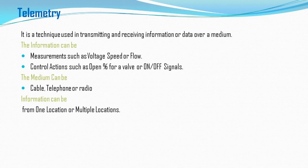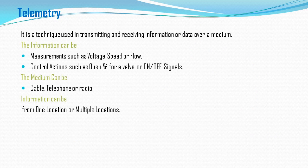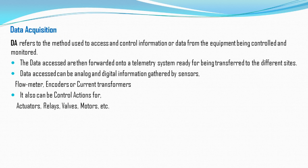Information can come from one location or multiple locations. For example, if you have three or four plants, information can come from all of them to the master control room. Data acquisition refers to the method used to access and control information from the equipment being monitored and controlled. Data is then forwarded into the telemetry system, ready to be transferred to the different sites.